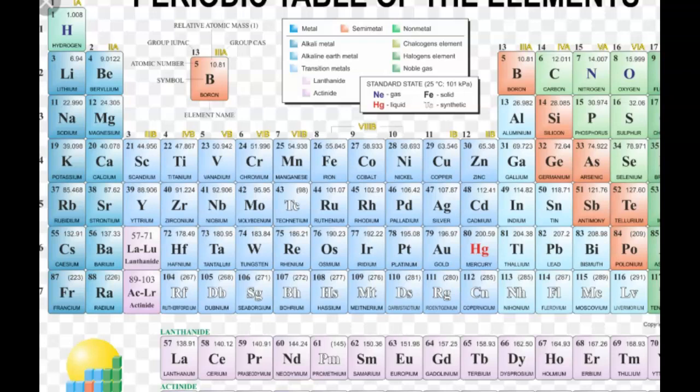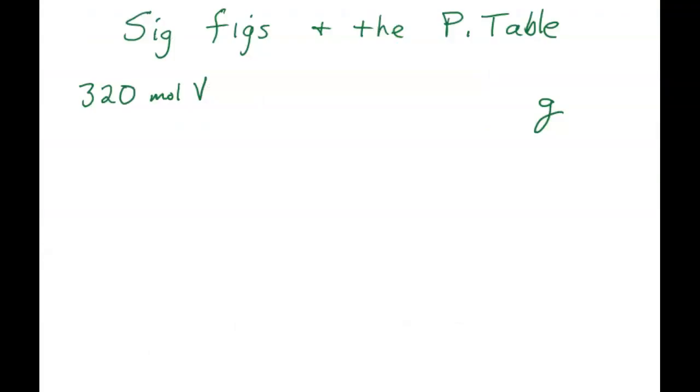Well, the rule is I need to look at my problem and see how many sig figs I've got in the beginning number. I have two sig figs there. So the number that I write down from the periodic table should not make my precision go down. I want to maintain two sig figs. So the number I write down from the periodic table has to have two sig figs or more.